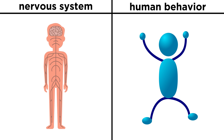Given the dual nature of biopsychology, research will focus on one of two things. Sometimes it is the nervous system that is studied, when examining biological aspects of the brain, and sometimes it is human behavior that is studied, when examining psychological aspects of human behavior.